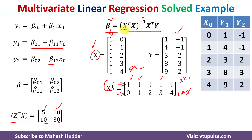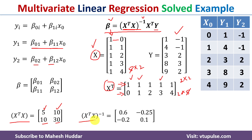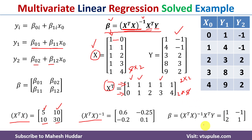Next we take the inverse of X'X. Using a scientific calculator or an online tool, the inverse is [[0.6, -0.2], [-0.25, 0.1]]. We then multiply this by X-transpose and multiply the whole result by Y. Performing this matrix multiplication gives us the values 1, -1, 2, and 1, which are β₀₁, β₀₂, β₁₁, and β₁₂ respectively.